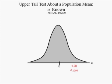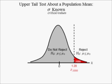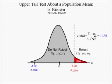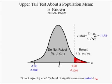Next, plot the critical value denoted Z subscript 0.1000, equal to 1.28, on the number line. This value defines the reject the null hypothesis and the do not reject the null hypothesis regions. In addition, the area to the right of this value is equal to the significance level of 0.1000. If the sample data yields a Z-stat equal to negative 1.35, it is plotted on the number line left of the critical value 1.28. Hence, we cannot reject the null hypothesis at a 10% level of significance since the Z-stat is less than the critical value in an upper tail test.